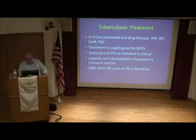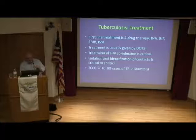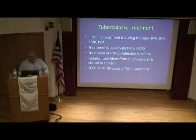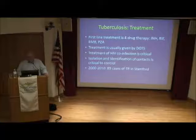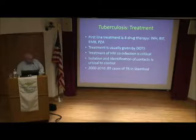TB treatment is generally straightforward now, using four antibiotics: INH, rifampin, ethambutol, and pyrazinamide, often administered by the Department of Health. TB declined significantly in the US in the late 1970s and early 1980s, then roared back with the HIV epidemic in the 80s and 90s. Now most TB in the United States is not associated with HIV but with immigration. In the city of Stanford, looking at numbers from four or five years ago and last night, the figures remain roughly the same.